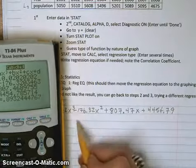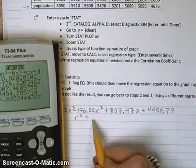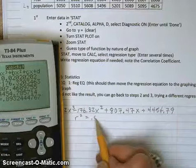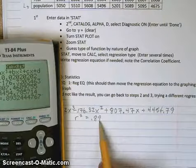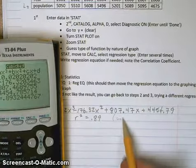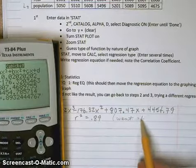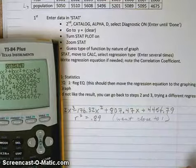Now this has a diagnostic. This has regression of 0.89. That correlation coefficient is not real good. We want that to be close to 1. So it's not really, really close. But it's okay.